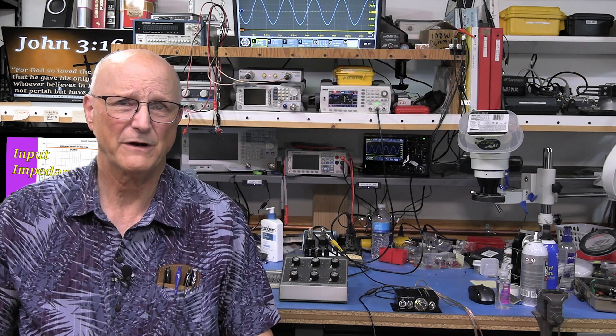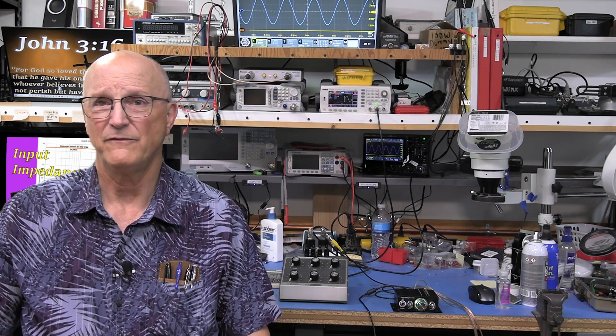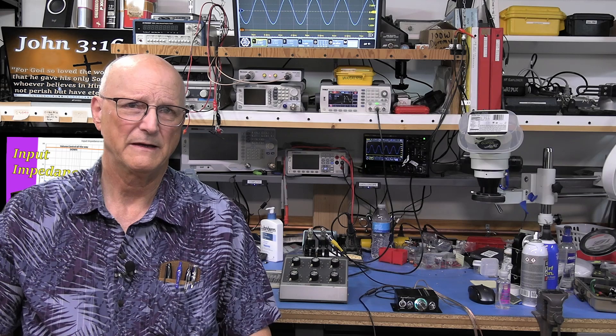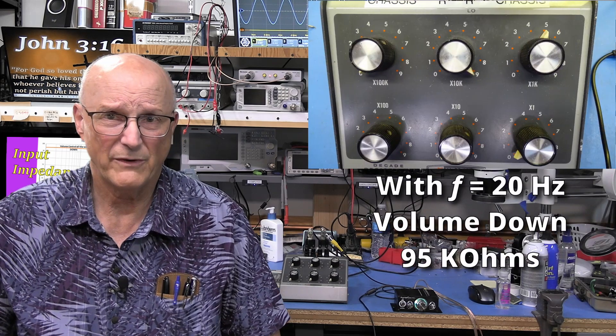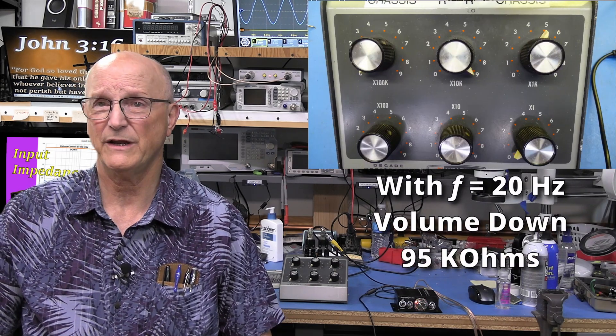I'm going to reset my signal source back to 400 mV. Now, let's set the frequency to 20 Hz and the volume control all the way down. So, with the volume control all the way down and the frequency set to 20 Hz, it comes out that the input impedance is 95 kOhms.